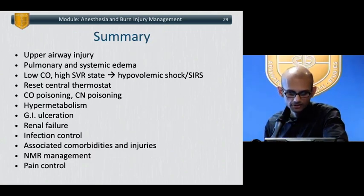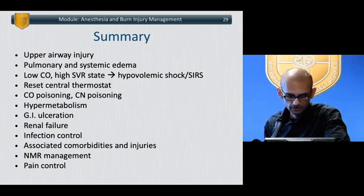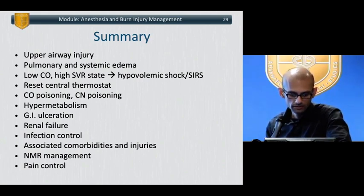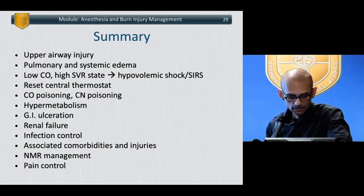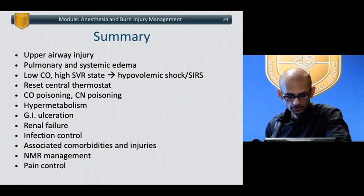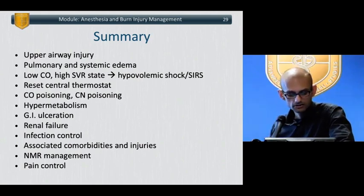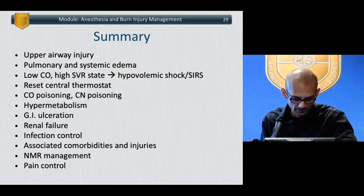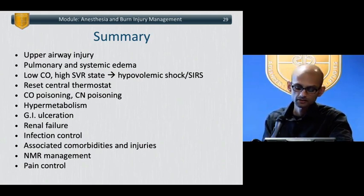Summary of anesthetic management considerations for burn injury patients: strong consideration for upper airway injury and elective tracheal intubation and bronchoscopy; pulmonary and systemic edema from fluid dysregulation; low cardiac output and high SVR state transitioning to hypovolemic shock; significant thermoregulatory dysregulation, carbon monoxide poisoning, hypermetabolic states, GI ulcerations, and renal failure from hypoperfusion. There is significant impaired cellular immunity increasing infectious risk, management of neuromuscular blockers with succinylcholine contraindications and increased dosage requirements for non-depolarizing agents, and significant multimodal strategies for adequate pain control.